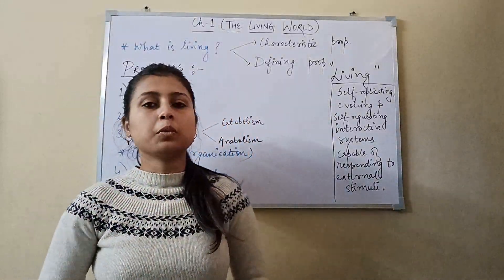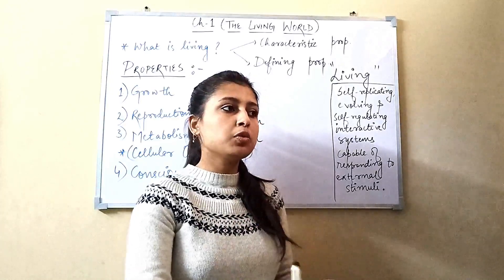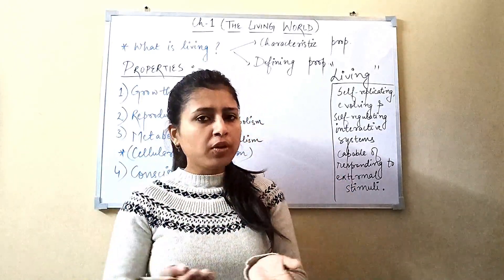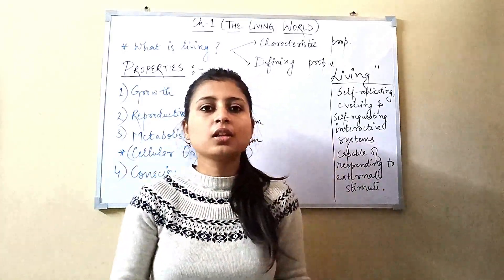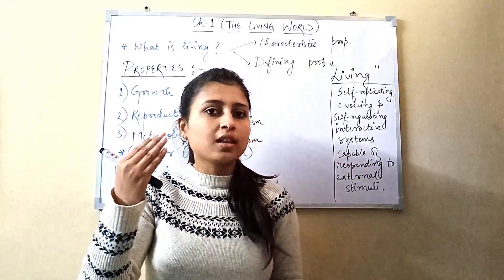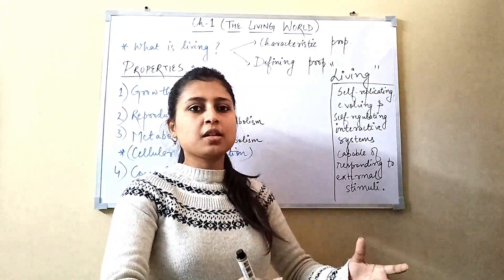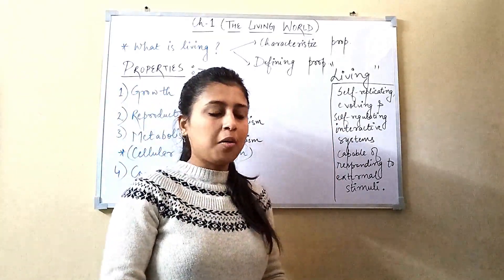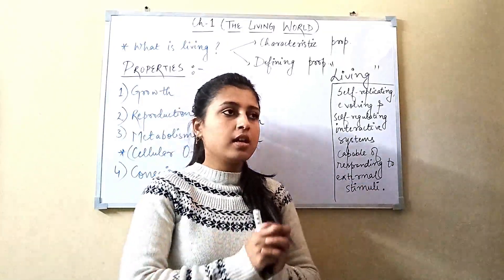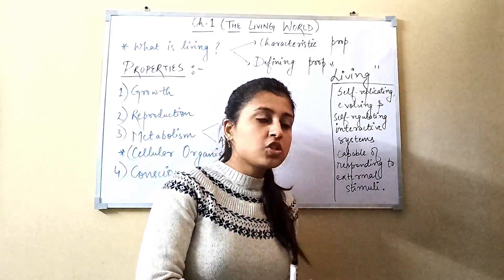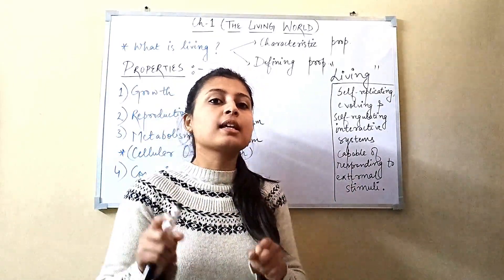Today's topic is the living. The term 'living' can be applied to an organism which possesses a group of characteristics or properties unique to them. When we look at any organism, we have some features to identify it — for example, a dog has 4 legs and certain characteristics — and those characteristics help us differentiate between living and non-living organisms.